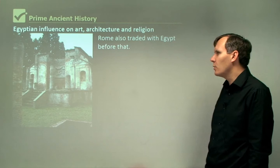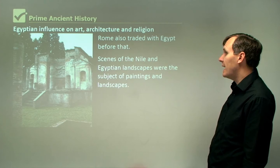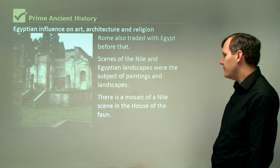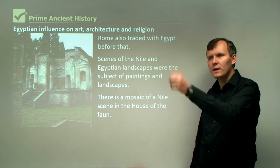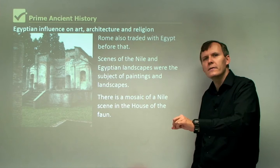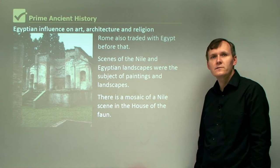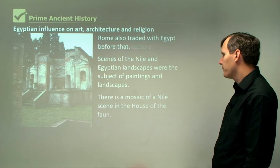Scenes of the Nile and Egyptian landscapes were the subject of paintings and mosaics. There is a mosaic of a Nile scene in the House of the Fawn. A mosaic is not like a painting — a painting uses a brush, whereas a mosaic uses coloured stones placed together to make a picture. The House of the Fawn is one of the most famous and biggest houses in Pompeii.